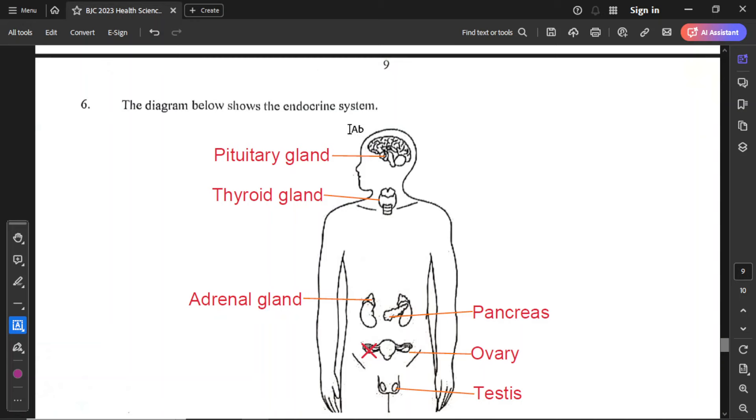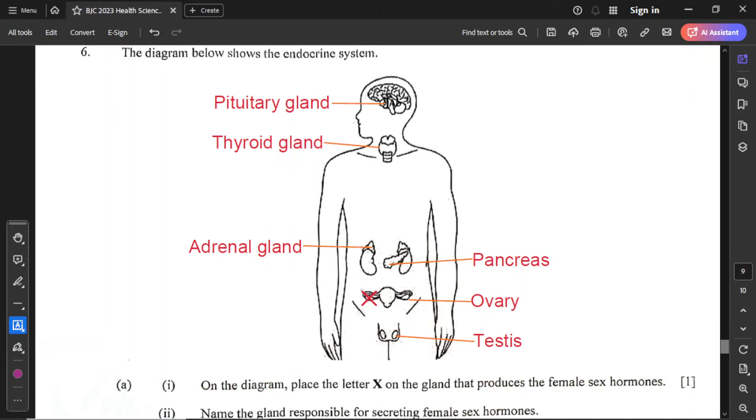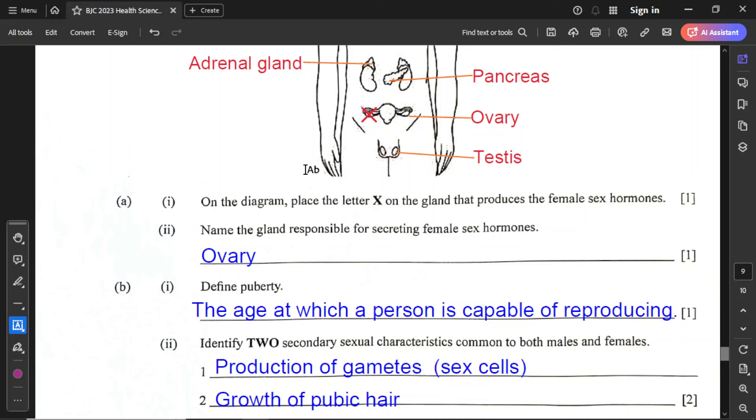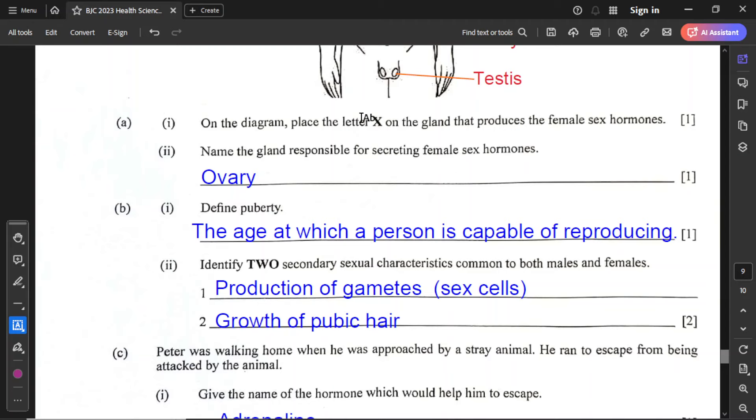Final question. The diagram below shows the endocrine system. I have already labeled. In the brain, you have the pituitary gland. You have the thyroid gland in your throat. The adrenal gland rests on top of the kidneys. We have the pancreas, ovaries for female, and testes for male. This diagram shows you both male and female together. You do not have both of them in any one person. For part A1, on the diagram place the letter X on the gland that produces the female sex hormones. That is the ovary, and I put the X over that one. You could draw a line and put the X on the outside, but placing it on the structure makes sense.